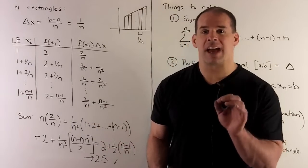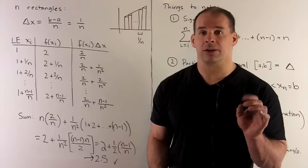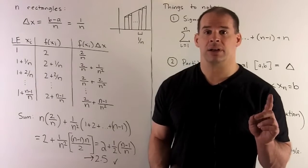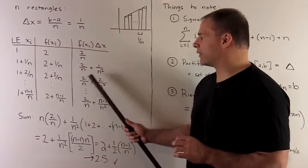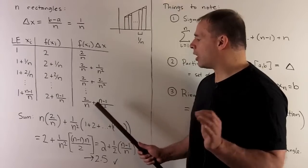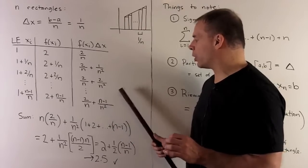Finally, to get the area of the rectangle, I multiply by 1/n, the length of the base. So, that's going to give us 2/n, 2/n + 1/n², 2/n + 2/n², all the way up through 2/n + (n-1)/n².